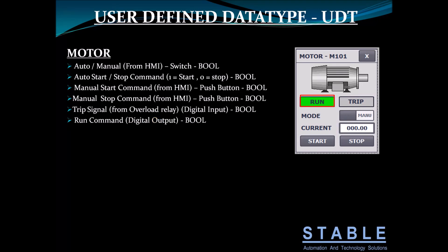A signal or command goes to start and stop the motor, and the seventh tag is motor current, which shows what current the motor is consuming. So we have a total of seven tags related to a single motor. We will define a UDD and see how it works.